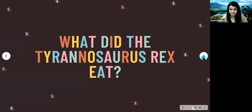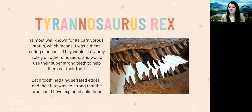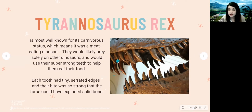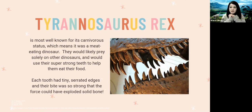What did the Tyrannosaurus rex eat? They were most well known for being carnivores — meat-eating dinosaurs — that would prey on other dinosaurs, using their super strong teeth to eat. Each tooth had a tiny serrated edge to help tear into food. When they bit down, their bite was so strong it would have exploded solid bone. If they bit into another dinosaur and hit bone, it would have exploded right on impact.